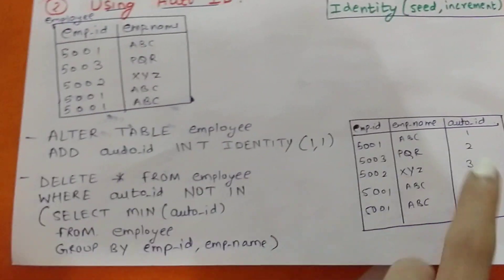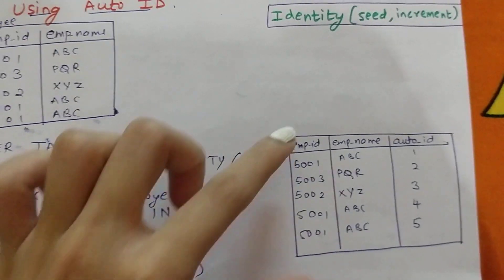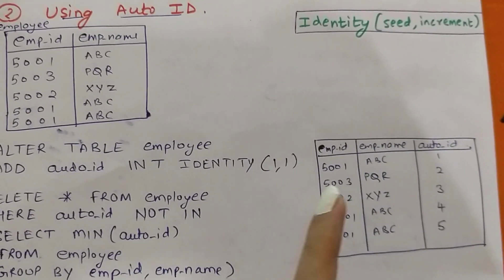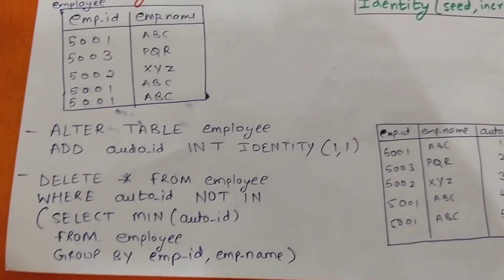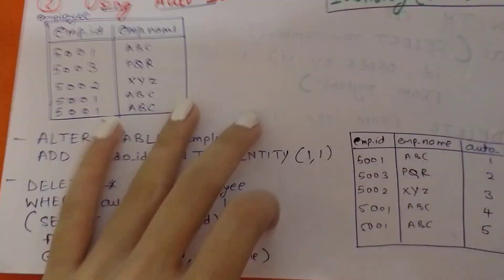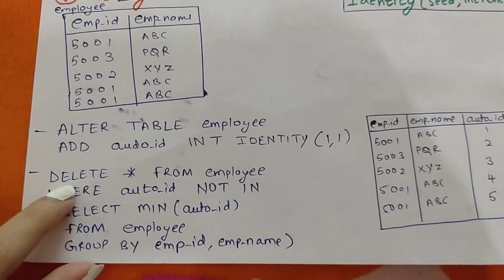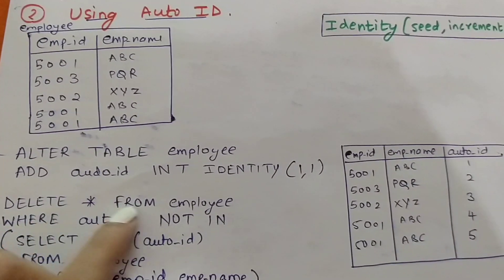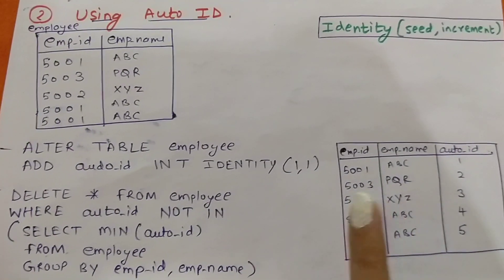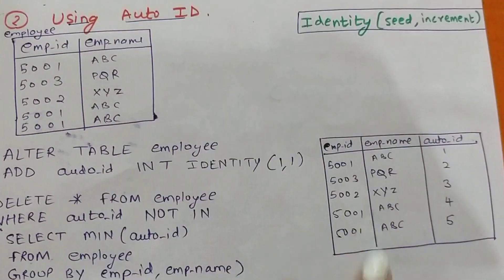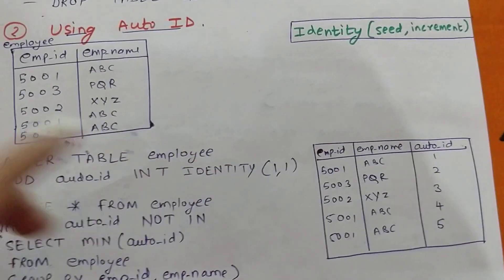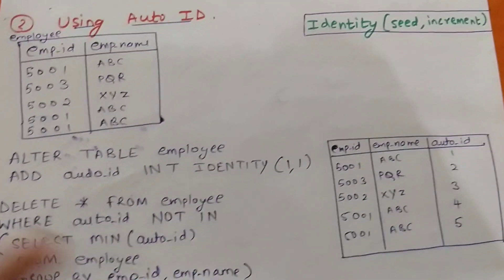So the inner query returns 1, 2, and 3. The first group is the three 5001 rows — the minimum auto_id among them is 1. 5002 appears only once, so it returns 3. 5003 returns 2. The outer query then deletes all rows from the employee table where auto_id is NOT IN (1, 2, 3) — meaning rows 4 and 5 are deleted. Only the first three rows remain, which removes the duplicate items. That's how we use auto ID.